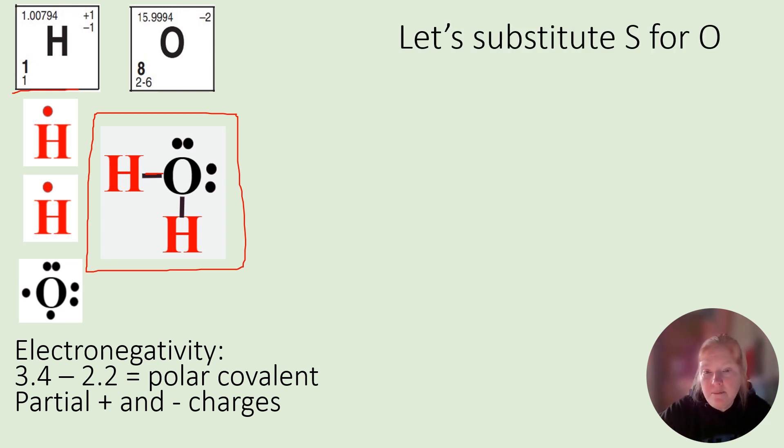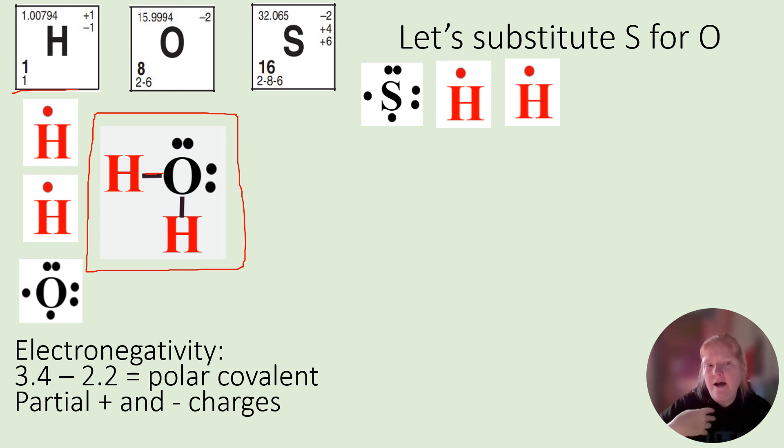So now let's substitute S for O. Let's see how we do. All right. There's S. What do you notice? Also has six. So instead of having one oxygen and two hydrogen, we're substituting sulfur for oxygen. So we have one sulfur and two hydrogen.